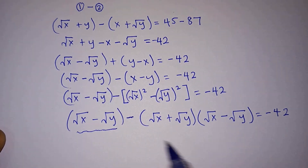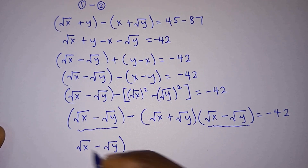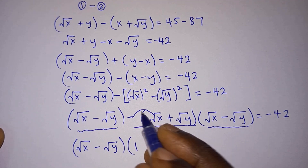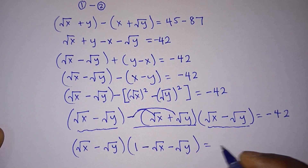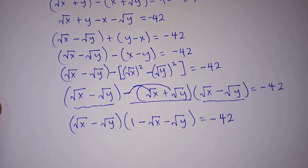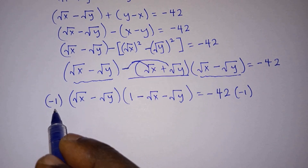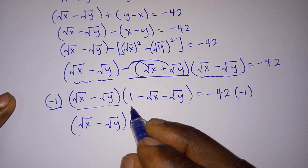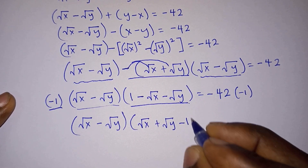We see that (√x minus √y) is a common factor. Factoring it out, we get (√x − √y) times [1 minus (√x + √y)], equal to negative 42. Multiplying both sides by negative one, we get (√x − √y) times (√x + √y − 1), equal to 42.